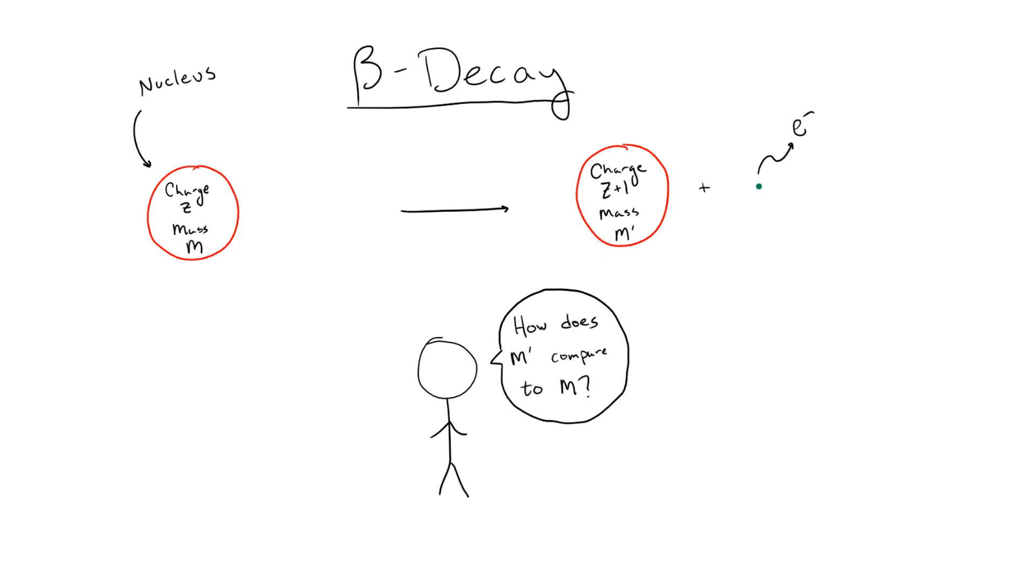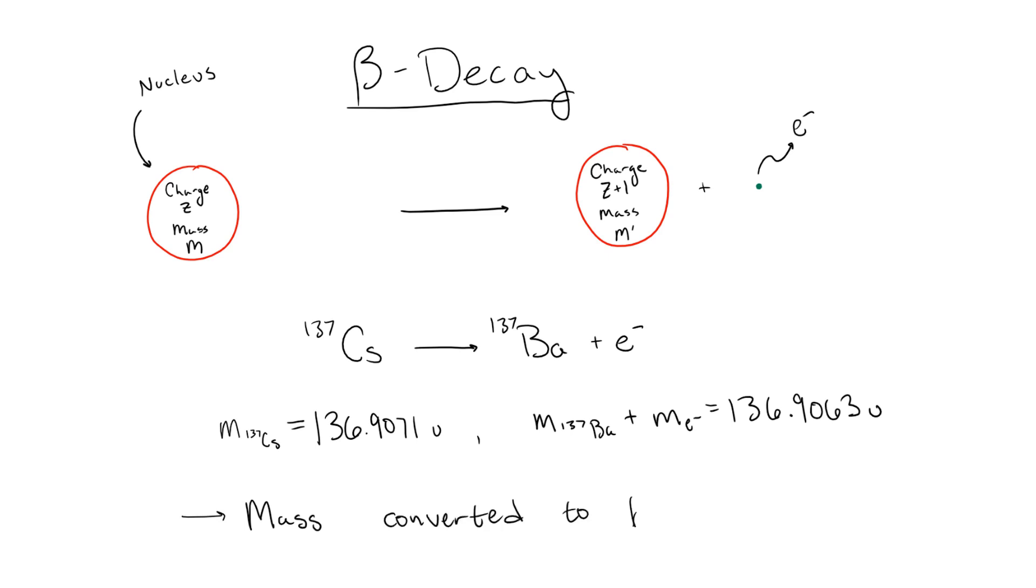When we look at the mass of a nucleus before and after it decays, we see that the initial nucleus is actually heavier than the combination of the nucleus after decay and the electron. For example, cesium-137, with a mass of about 136.9071 atomic mass units, beta decays to barium-137. The combined mass of the decay products is about 136.9063 atomic mass units. Where does this extra mass go? Well, we know from special relativity that mass is just another form of energy. So if the final state particles after beta decay are moving, this loss of mass can be accounted for by converting it to kinetic energy.